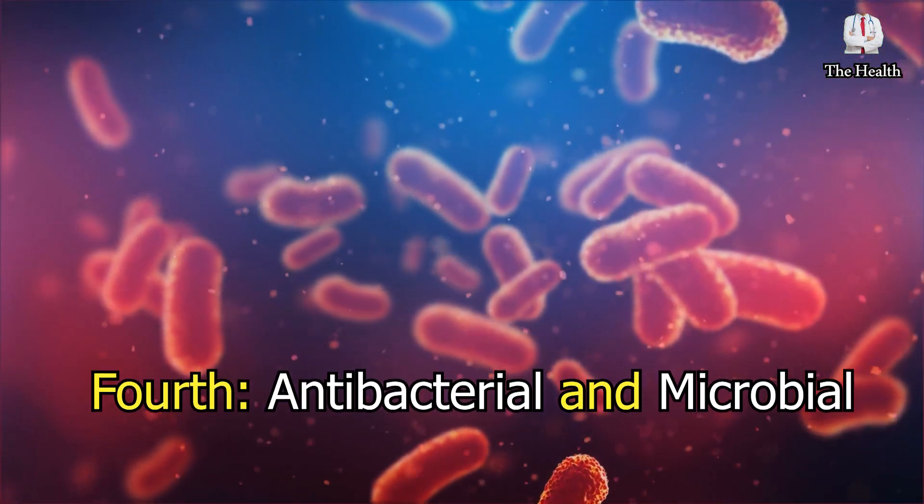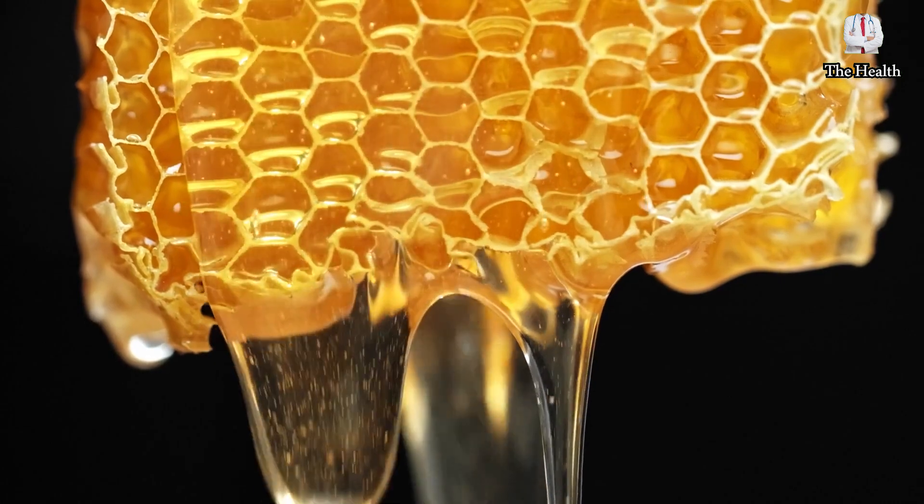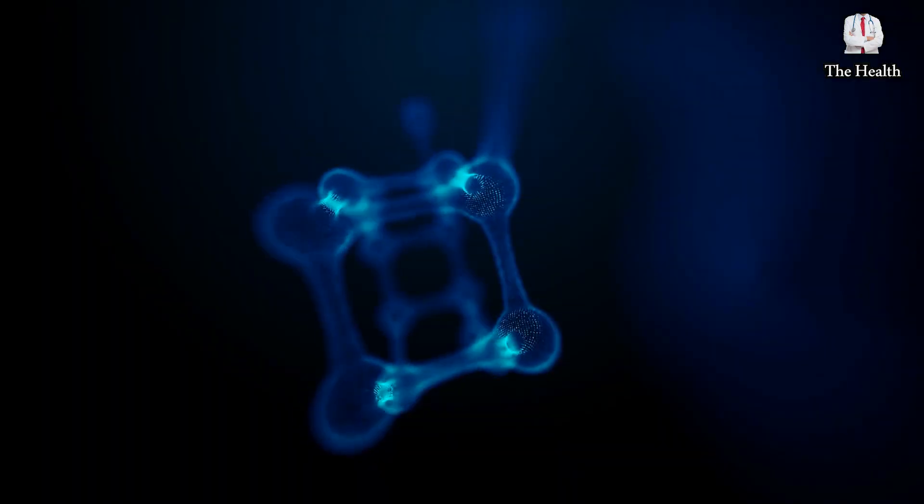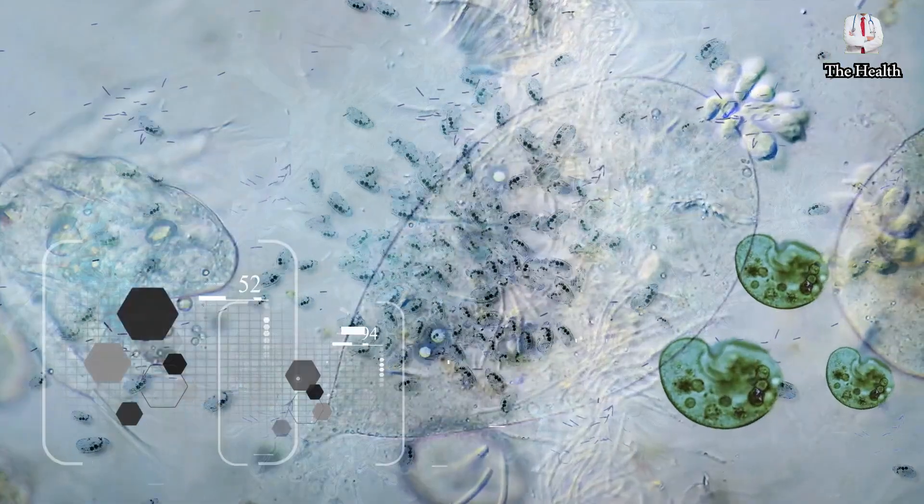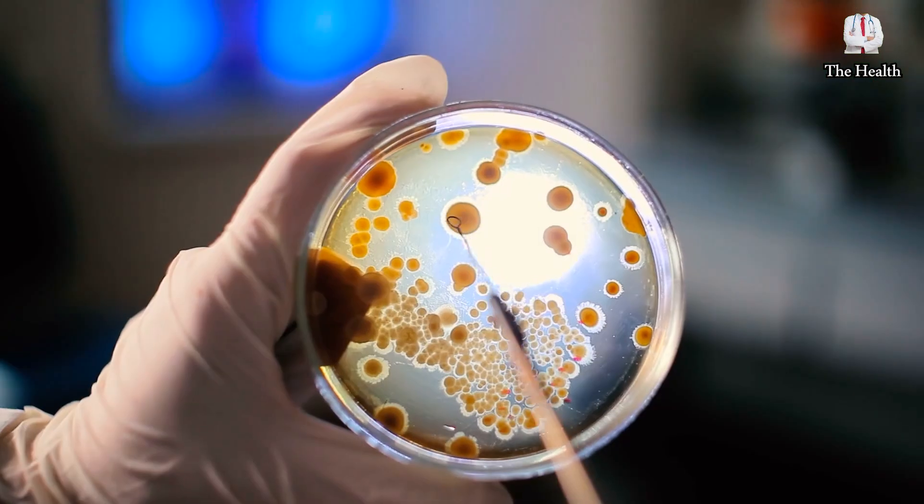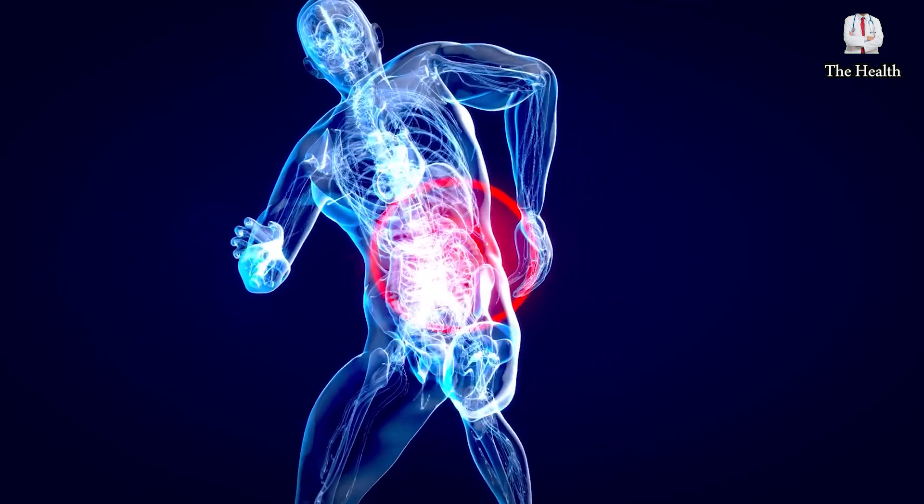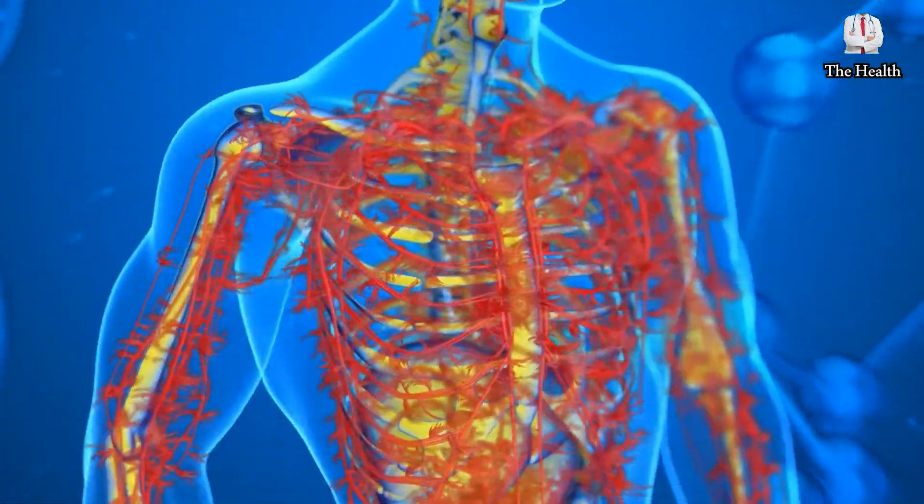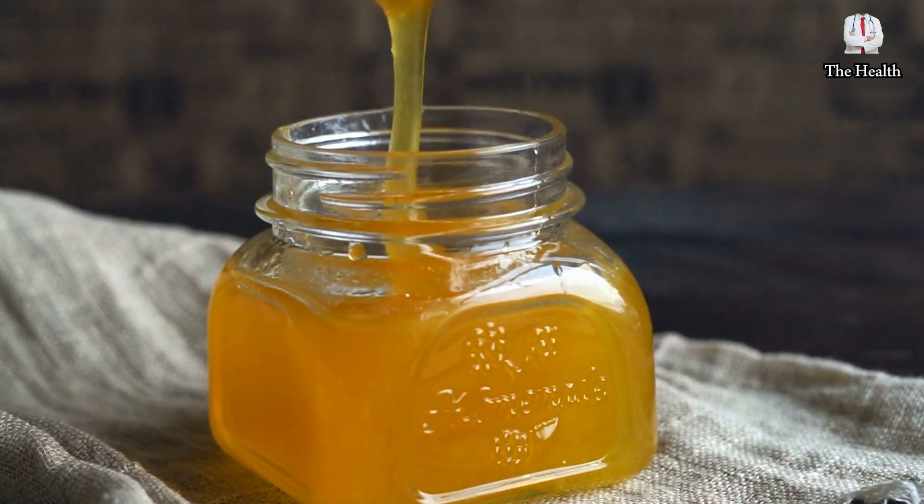Fourth, Antibacterial and Microbial. Honey is considered one of the most powerful antibacterials because it contains methylglyoxal and hydrogen peroxide, and these substances have the ability to kill many microbes, viruses, and fungi. Honey also secretes antiseptic substances that reduce inflammation and poisoning in your body. Therefore, honey is considered one of the most powerful known and important natural antibiotics.